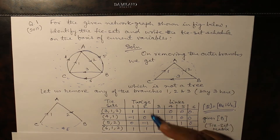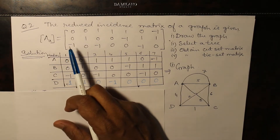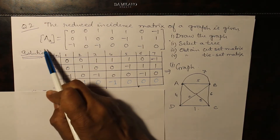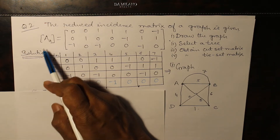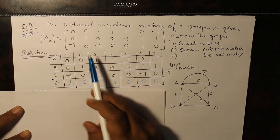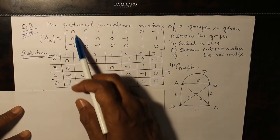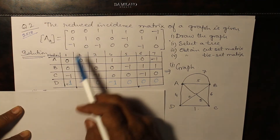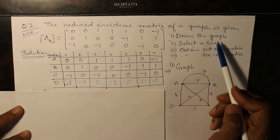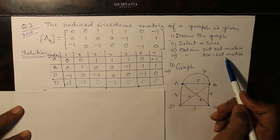This is the second example. The reduced incidence matrix of a given graph is provided — this was a 2018 exam question, a 12-and-a-half-mark question. We will first complete the incidence matrix by adding node D, then draw the graph, obtain a tree, write down the cut-set matrix, and find the tie-set matrix.